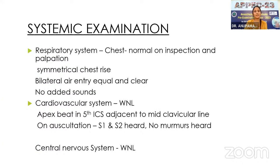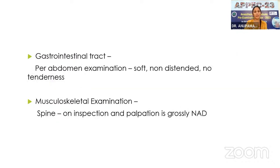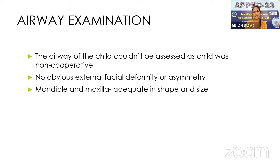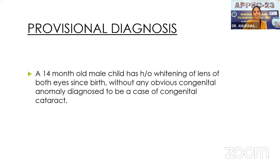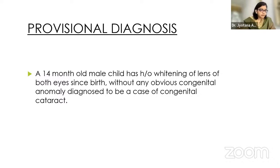Systemic examination: respiratory system shows symmetrical chest rise, bilateral air entry equal and clear, no added sounds. Cardiovascular system: apex beat at 5th intercostal space adjacent to mid-clavicular line, S1 and S2 heard, no murmurs. CNS, GI, and musculoskeletal examination within normal limits. Airway examination could not be fully assessed as the child was non-cooperative; no obvious external facial deformity or asymmetry, mandible and maxilla adequate in shape and size. Diagnosis: 14-month-old male child with bilateral lens opacity since birth, diagnosed as congenital cataract.